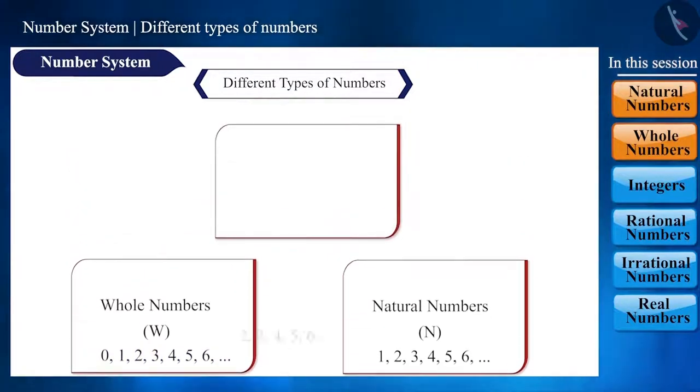If we take negative forms of natural numbers, i.e., minus 1, minus 2, minus 3, etc., even that group will look something like this. The group formed is called integers and is expressed with the symbol Z.